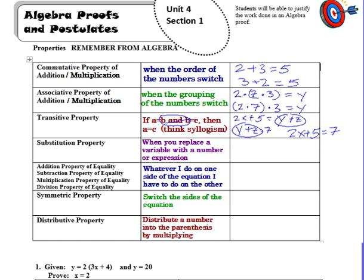Substitution is very similar to transitive property. In fact, sometimes in our proof unit we use them interchangeably. But if I had something like 2x plus 10 is equal to y, and then if I told you that x was equal to 5, I could do a substitution and say, oh, substitute 5 in for x. So that's a substitution.